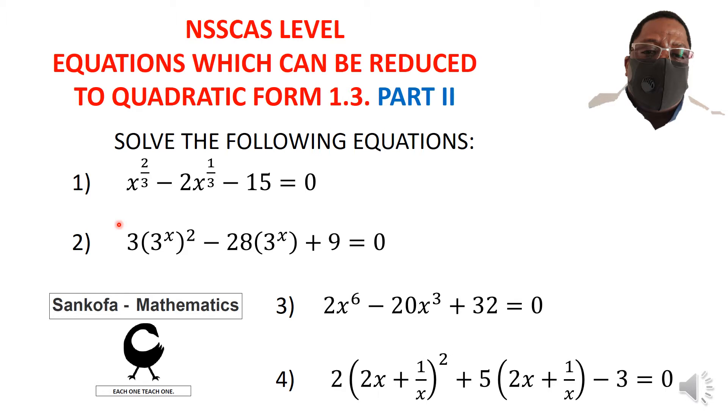The first one is x^(2/3) - 2x^(1/3) - 15 = 0. Then 3(3^x)^2 - 28(3^x) + 9 = 0. The third one is 2x^6 - 20x^3 + 32 = 0. And the fourth one, I've got 2 multiplied by this stuff here squared plus 5 times the very same stuff minus 3 equal to 0.